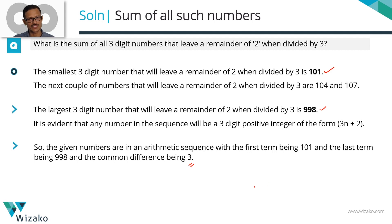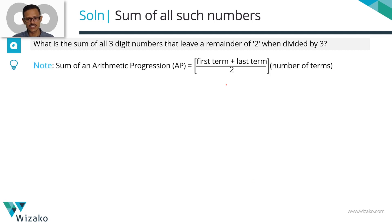Now all that is left is to compute the sum. Sum of an arithmetic progression is given by this formula: first term plus last term divided by 2 times number of terms. We know the first term is 101 and last term is 998. The only thing left is to compute the number of terms, plug in those values here and get to the answer.